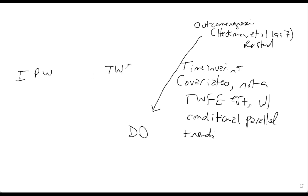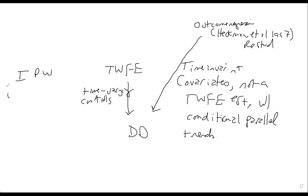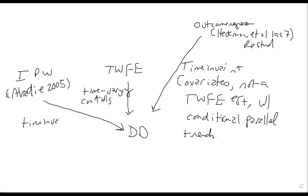Two-way fixed effects had time-varying controls. This one had time-invariant controls - it just used two-way fixed effects, it was a multivariate regression that put a bunch of stuff on the right-hand side. And then the inverse probability weighting - that's Abadie 2005 - and it handles time-invariant controls to satisfy conditional parallel trends.